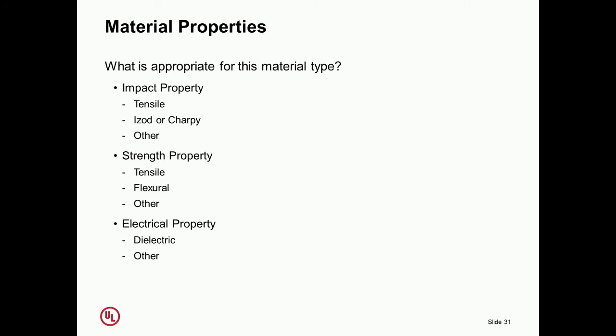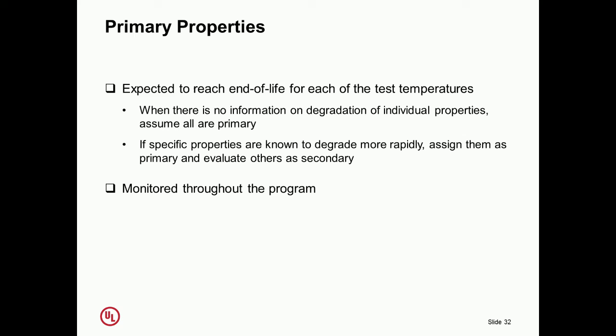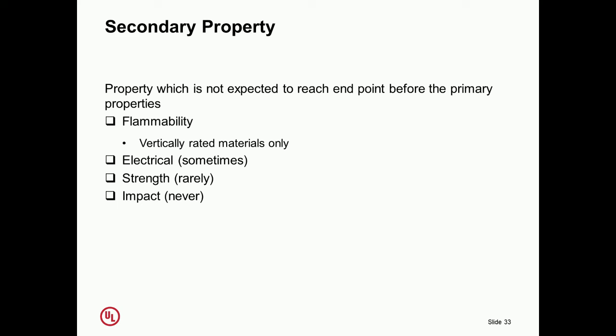We'll look quickly at the material type, look at what's important in the end product design they want to use the material in, to determine those properties we want to measure and look for that degradation. We have two sets of material properties. We'll look at primary characteristics and secondary. Primary properties are those most likely to be relied upon in the end product and also most likely to fail the quickest, so these will be monitored continuously. In the secondary properties, those are the ones we think will take longer to degrade, so we consider them less important to monitor during the test. We'll just do testing following the exposures. Those are things like flammability, sometimes electrical strength and impact.